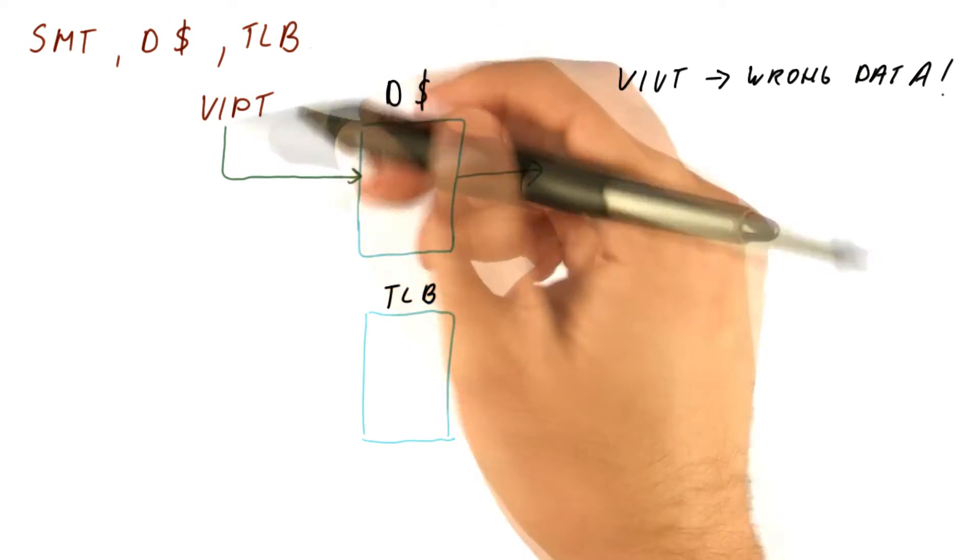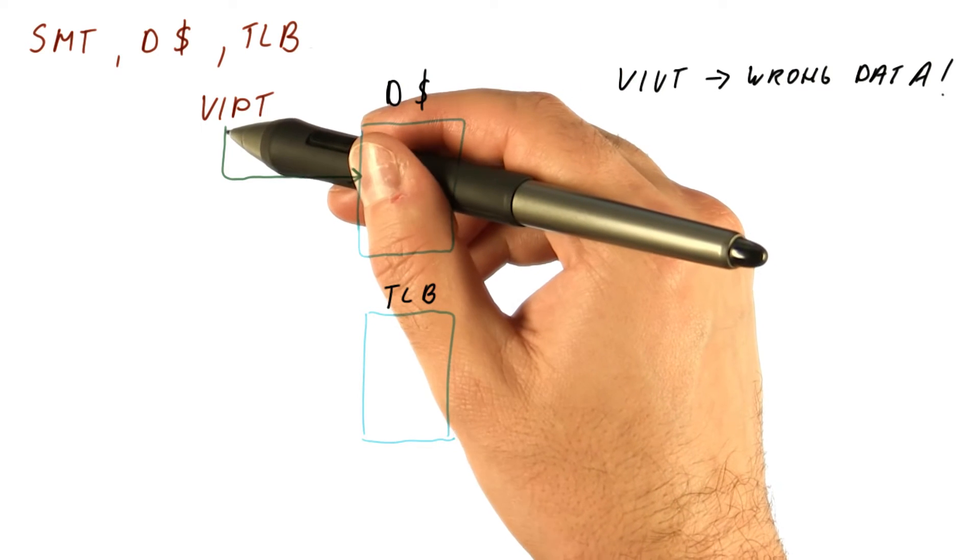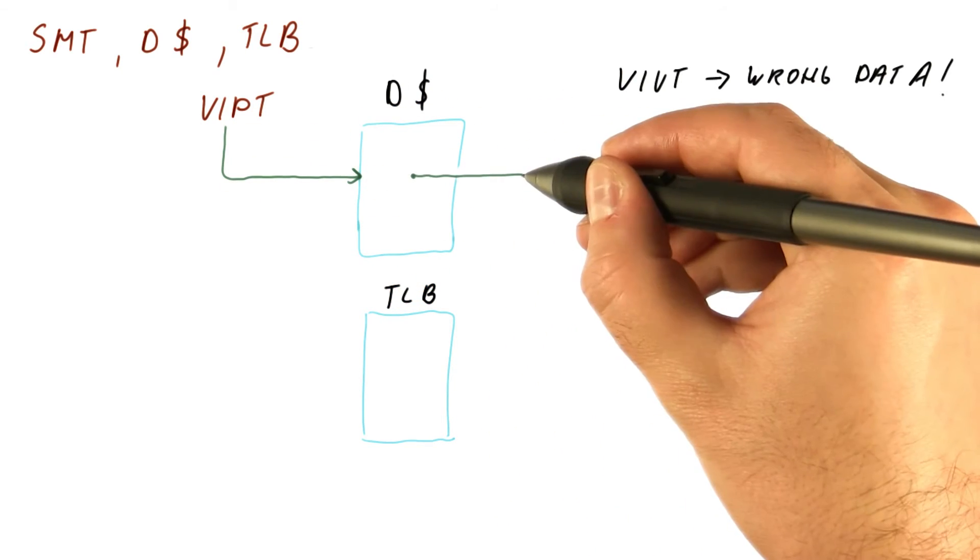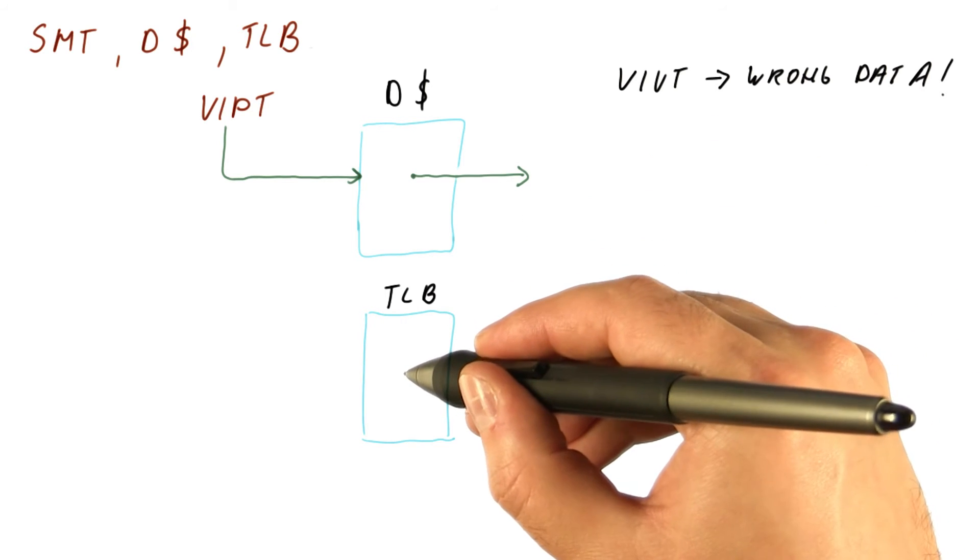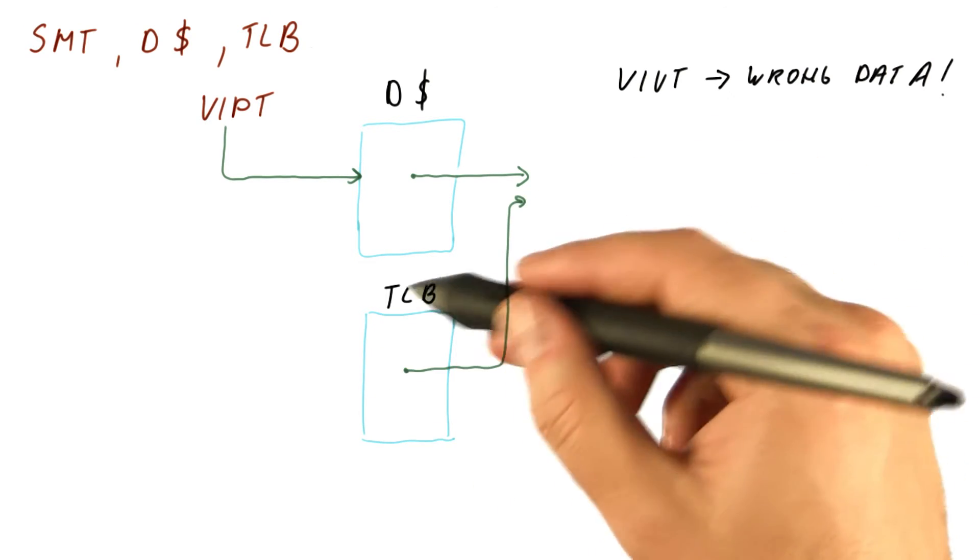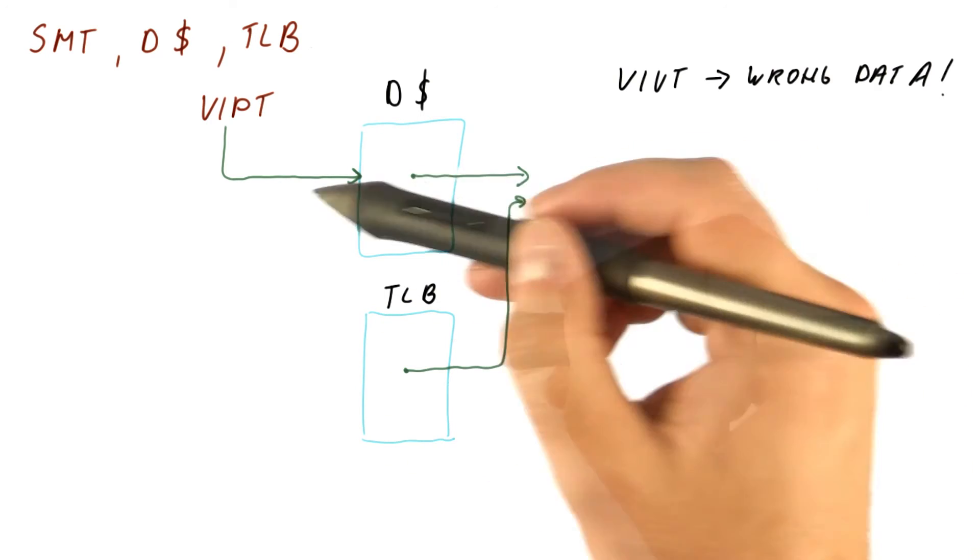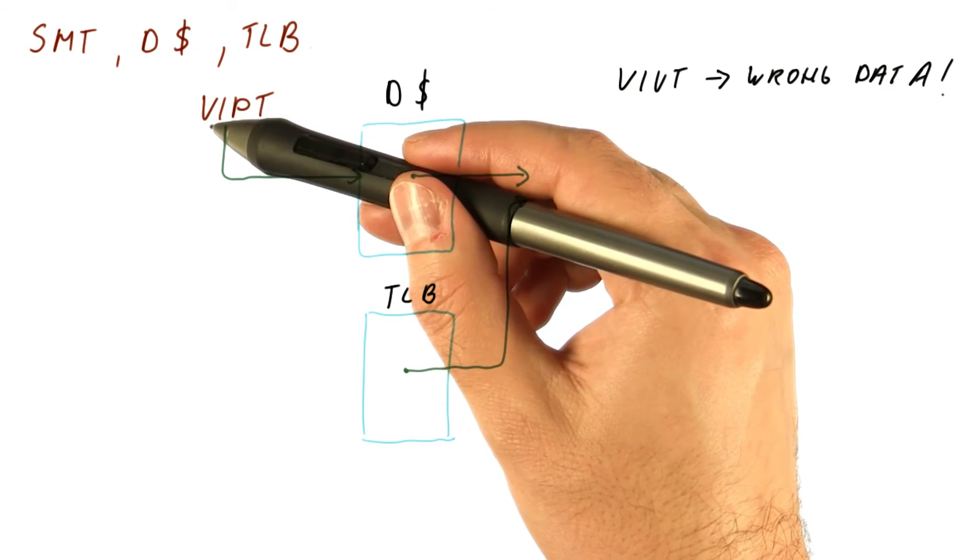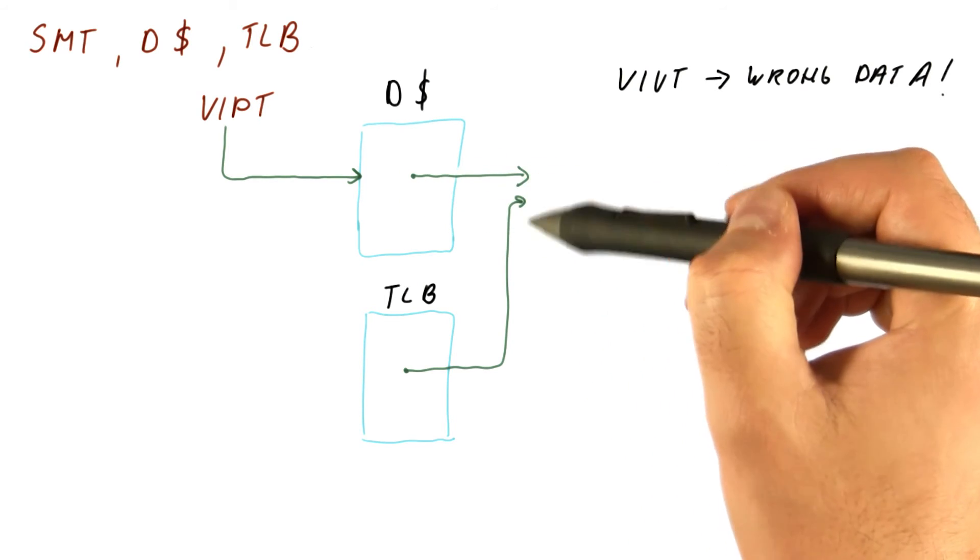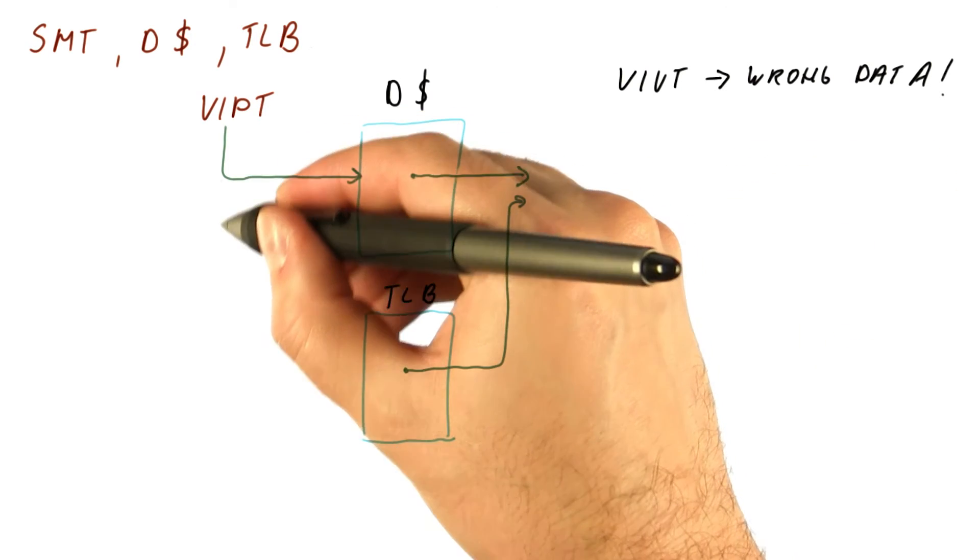If we use a virtual indexed physically tagged cache that avoids aliasing, then we are fine. We will find the set in the cache, and the physical tags that come out will be compared with those from the TLB. So assuming that the TLB does what it's supposed to do, we will have the same virtual address from the two threads, look up the same set, but find different data based on the physical address in that thread.